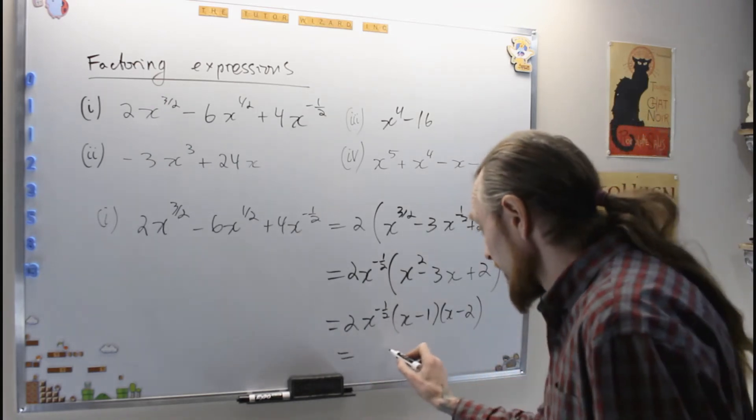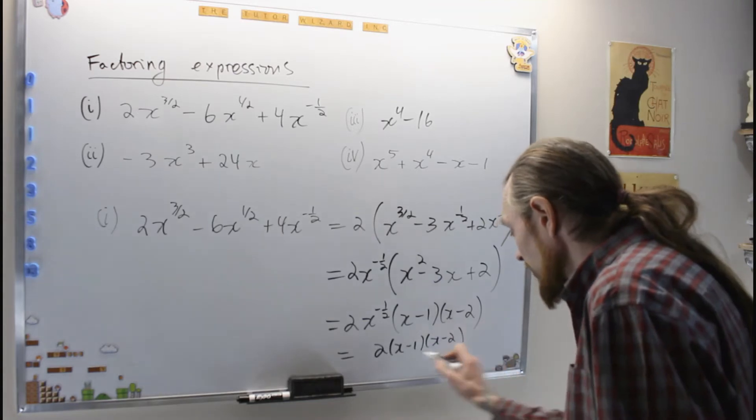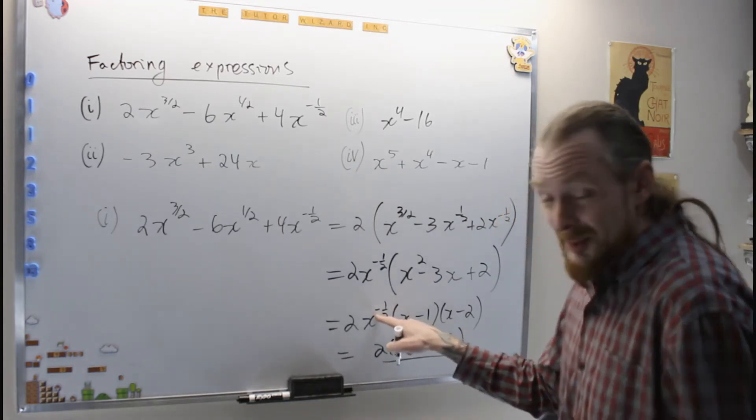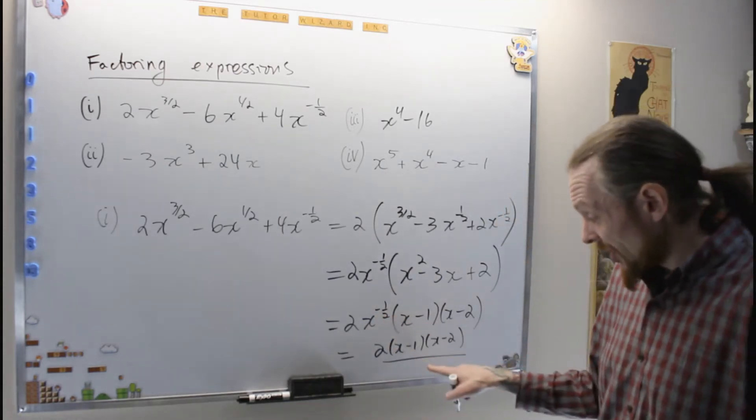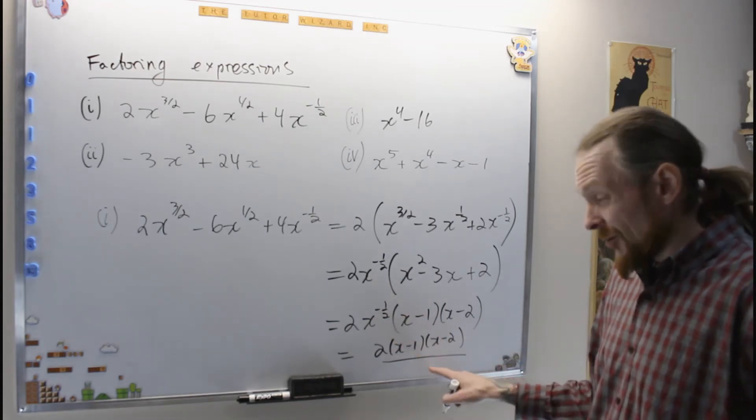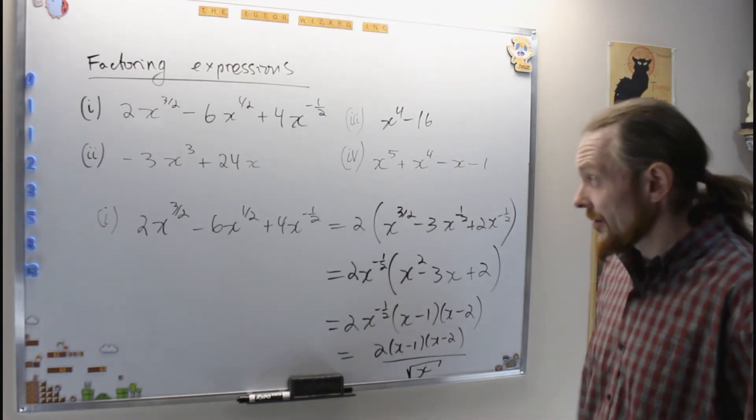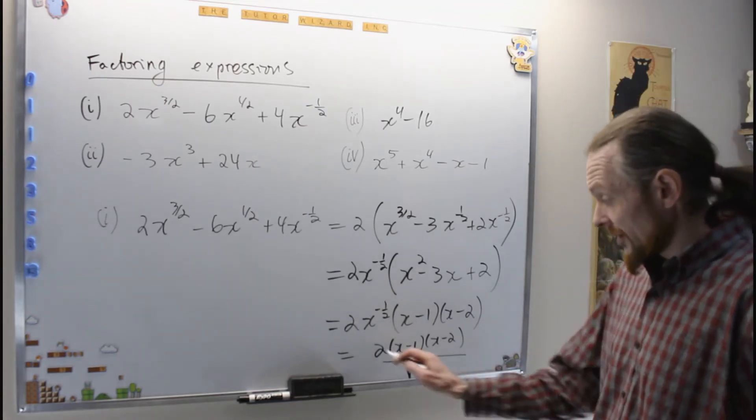And if you want to be really fancy, this is 2 times x minus 1, x minus 2 over, to make this exponent positive, I bring it to the bottom of the fraction, and then this is x to the 1 half, and 1 half is the square root of x. So that is the expression simplified.